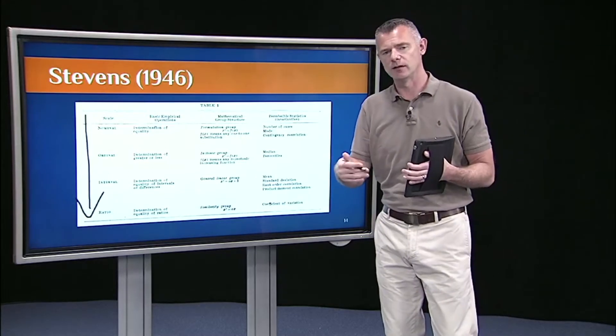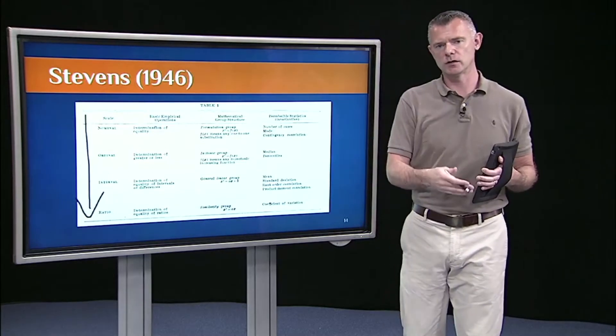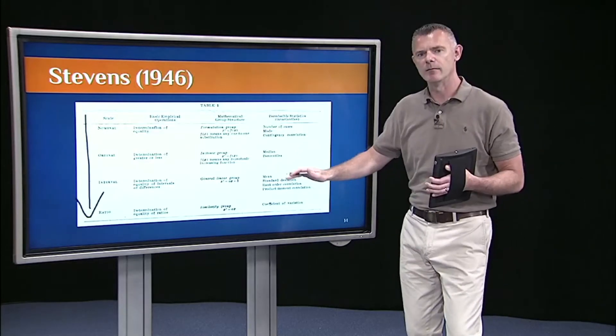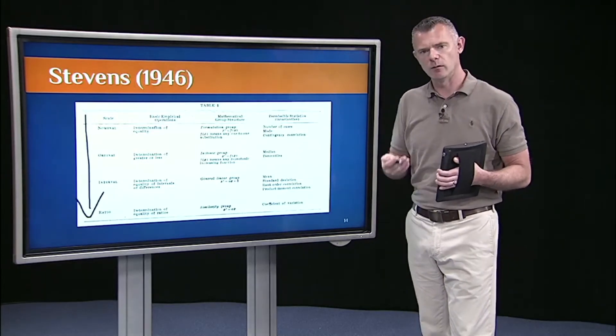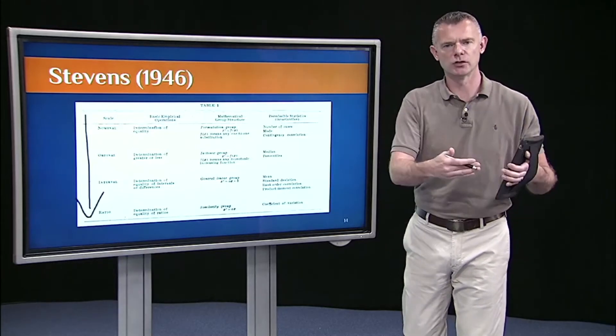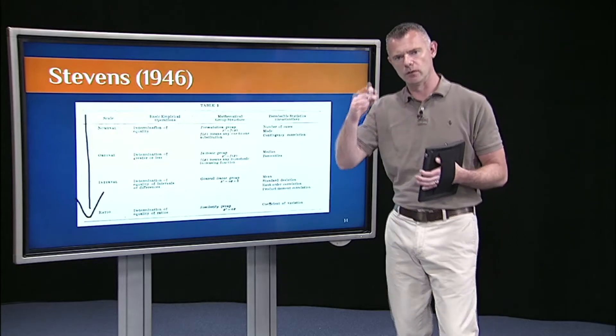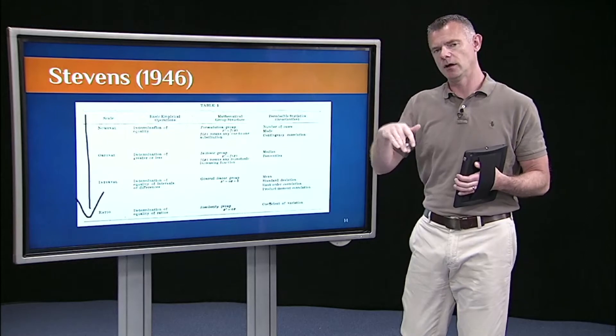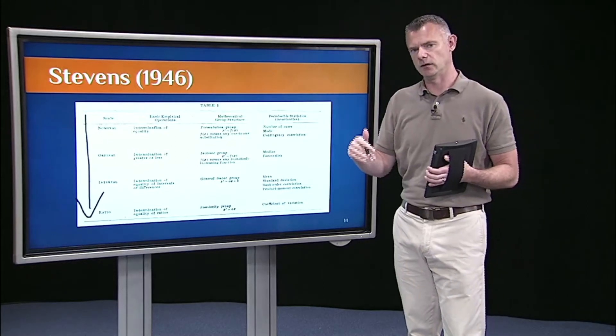But if I have their time, say it's a running race or a swimming competition, if I have time, that's a ratio variable, there's a true zero. Then I can ask questions about by how much did the winner come in first place over the second place finisher, and by how much did the second place finisher come ahead of the third place finisher.